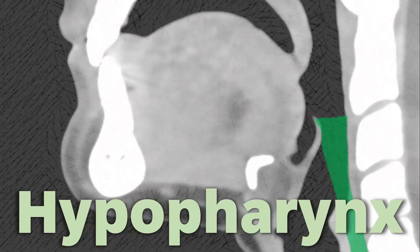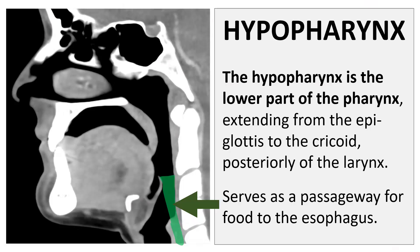Welcome to the last presentation on imaging anatomy of the pharynx. In this presentation we're going to talk about the anatomy of the hypopharynx. The hypopharynx is the lowest part of the pharynx, extending from the tip and the posterior surface of the epiglottis to the inferior surface of the cricoid, and serves as a passageway for food to the esophagus.